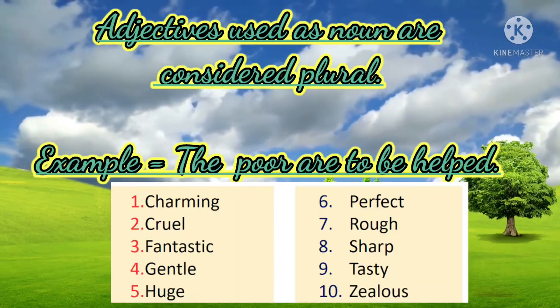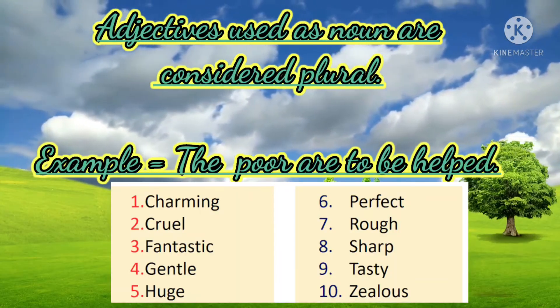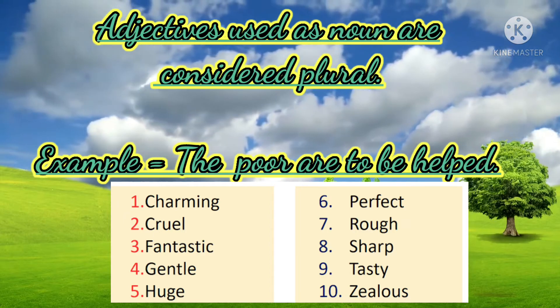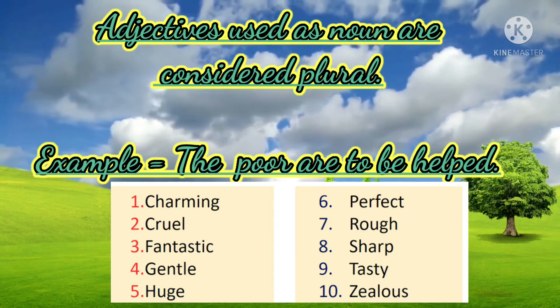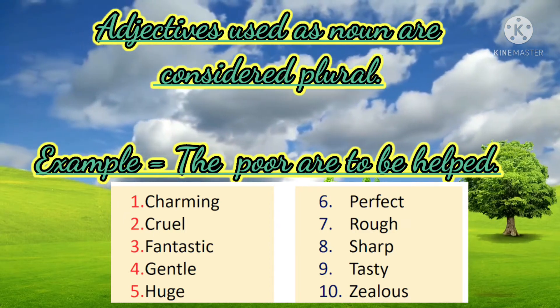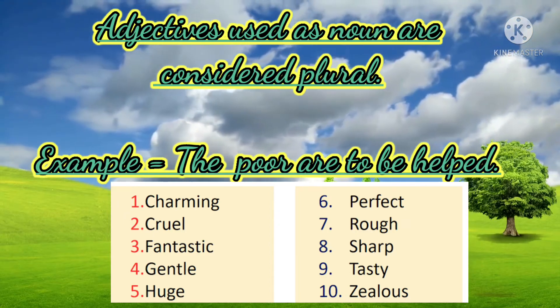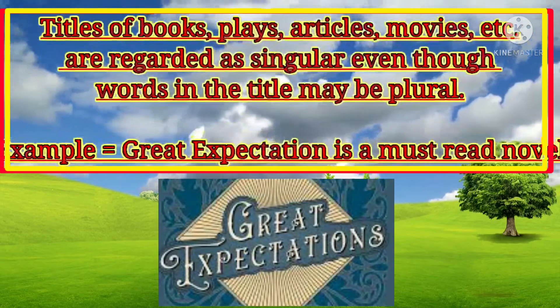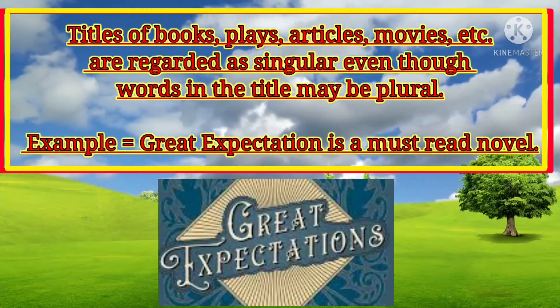Adjectives used as nouns are considered plural. Example: the poor are to be helped.